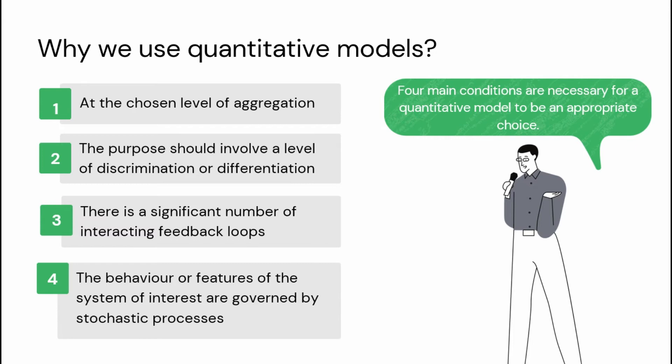Lastly, the behavior or features of the system of interest are governed by statistical or random processes. Here, a range of results is possible, but you cannot know in advance exactly which results will occur, although you may know the chance — formally the probability — of a particular result occurring.